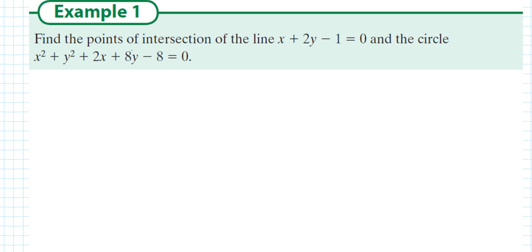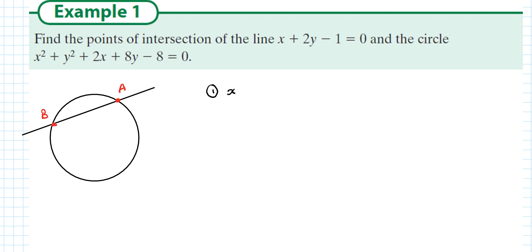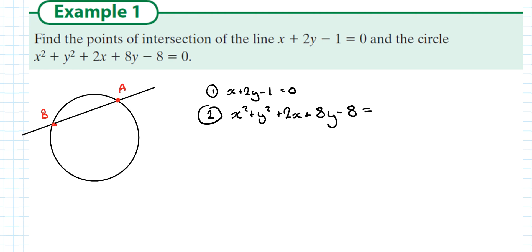Looking at the question: find the points of intersection of the line and the circle. So we have a circle and a line, and it says points plural of intersection — we're looking for point A and point B. Similar to finding the point of intersection of lines, we use simultaneous equations. We have two types of equations here: a linear and a nonlinear.